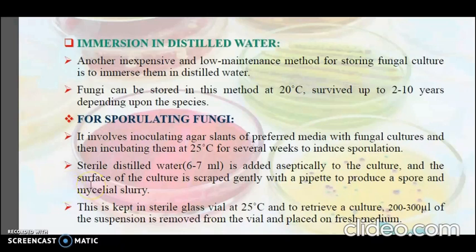For sporulating fungi, the method involves inoculating agar slants of preferred media with fungal cultures and incubating them at 25 degrees Celsius for several weeks to induce sporulation. Sterile distilled water is then added aseptically to the culture, and the surface of the culture is sprayed gently with a pipette to produce a spore and mycelial slurry. This is kept in sterile glass vials at 25 degrees Celsius, and to retrieve a culture, 200 to 300 microliters of the suspension is removed from the vial and placed on fresh medium.